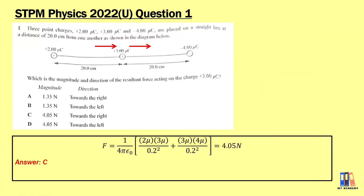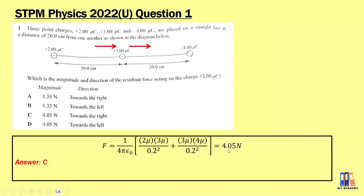Moving on to the second question in the 2022 Ulangan paper, we also have three point charges: positive 2 µC, positive 3 µC, and negative 4 µC. We determine the resultant force on the positive 3 µC charge in the middle. Between positive 2 and positive 3, there is repulsion, pushing positive 3 to the right. Between positive 3 and negative 4, there is attraction, also pulling positive 3 to the right. Both forces share the same direction, so both are positive values. Calculating gives approximately 4.05 N to the right. Answer is C.